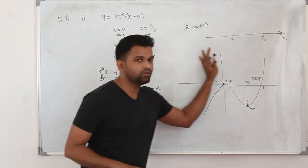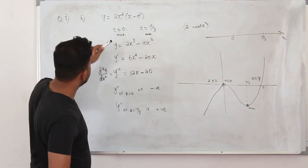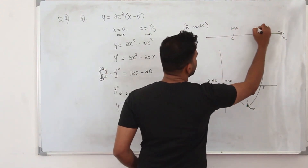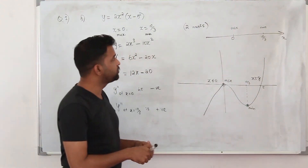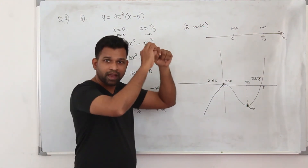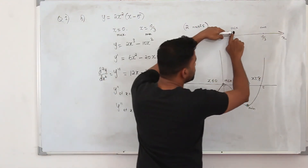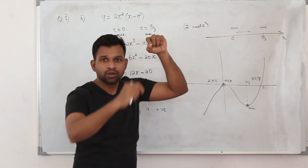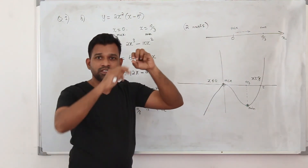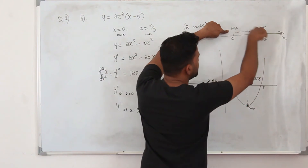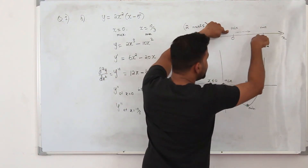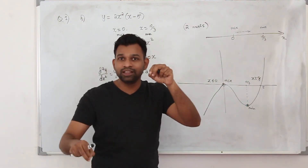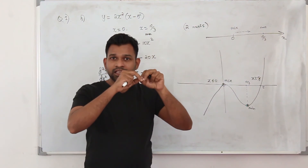Even without sketching the graph, knowing that x equals 0 is a maximum and x equals 10/3 is a minimum tells us that between those two points the function must be decreasing — it goes from maximum value down to minimum value. So in between this range the function is definitely decreasing.